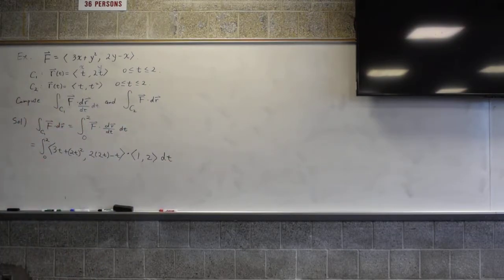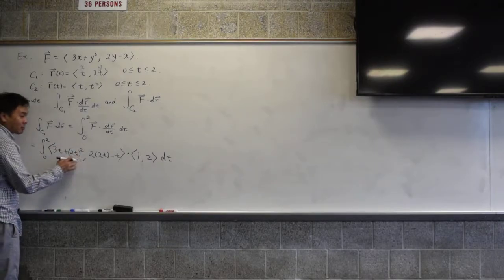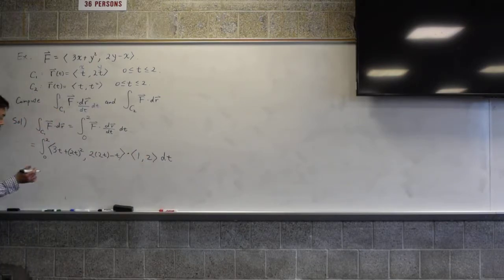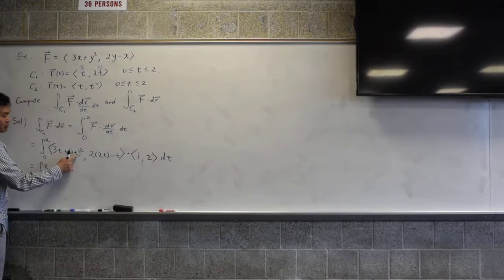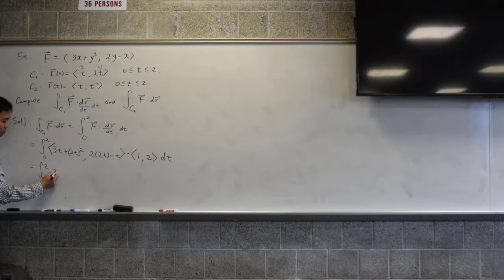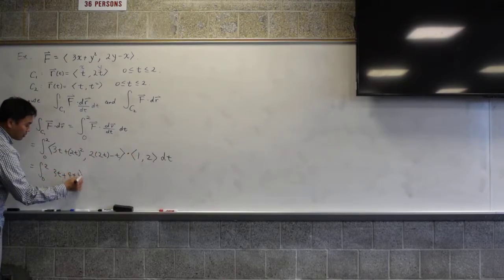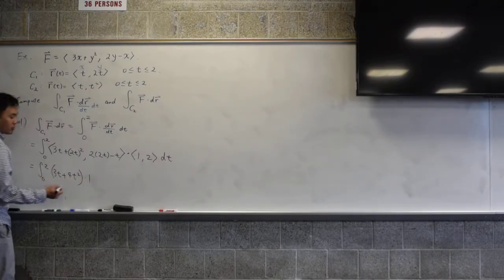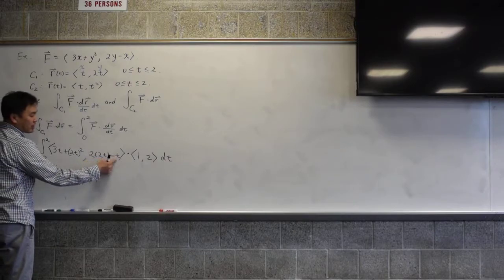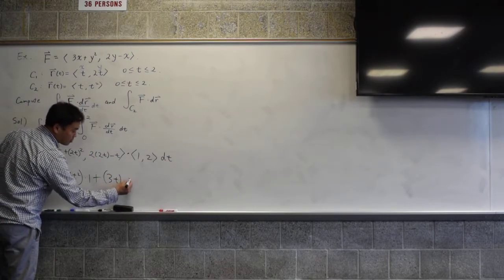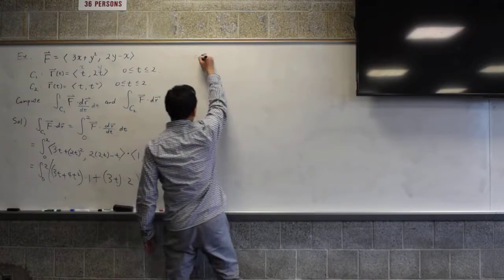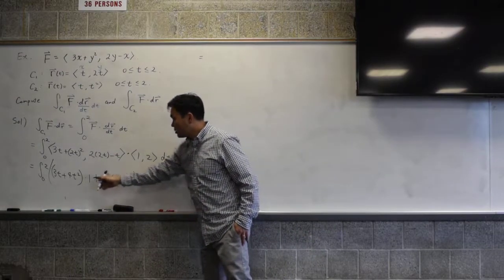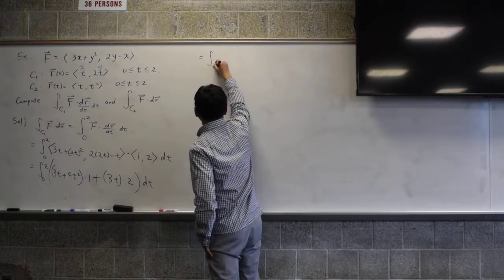And you just compute this. Afterwards, it's just a regular integral because everyone knows how to do a dot product. You multiply the x components together, y components together, and you add them up. So 0 to 2, 3t plus 4t² times 1, plus 3t times 2. That's 9t plus 4t².